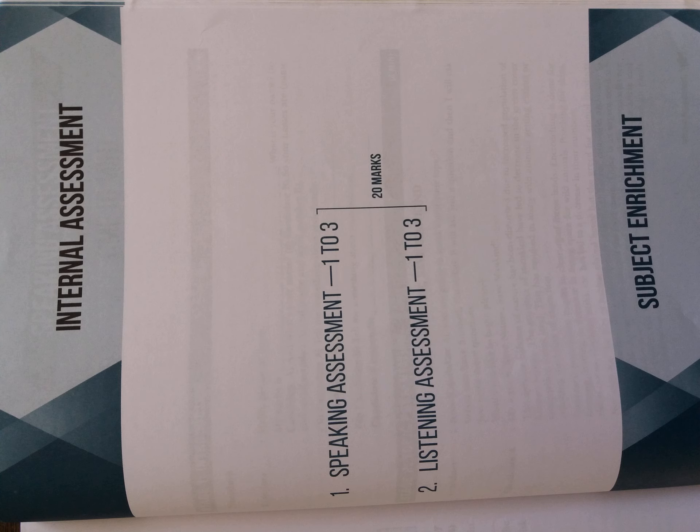The Bill seeks to amend Article 15 to additionally permit the government to provide for the advancement of economically weaker sections. Further, up to 10% of seats may be reserved for such sections for admission in educational institutions. Such reservation will not apply to minority educational institutions.